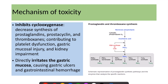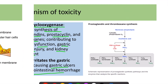Salicylates also inhibit cyclooxygenase, causing decreased synthesis of prostaglandins, prostacyclins, and thromboxanes. This contributes to platelet dysfunction, gastric mucosal injury, and renal impairment. Salicylates also directly irritate the gastric mucosa, causing gastric ulcers and gastrointestinal hemorrhage.